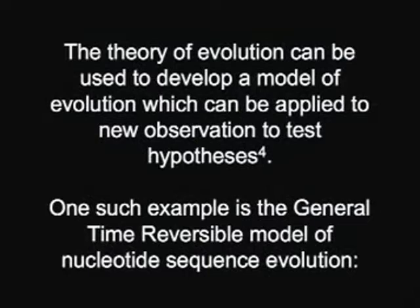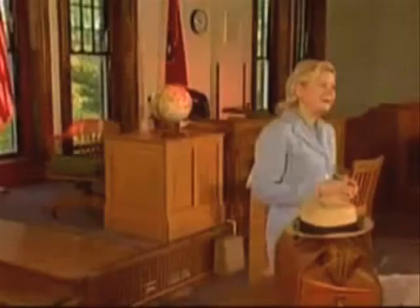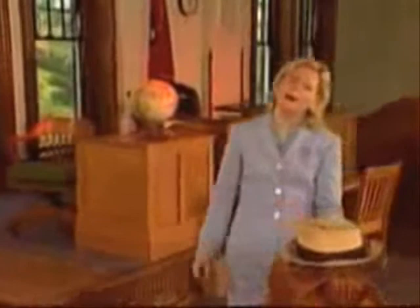This is the formula for calculating the log likelihood of evolution occurring at a single site in a nucleotide sequence. It's a good thing we have computers now. Let me show you how the myths about evolution having been proven are created.